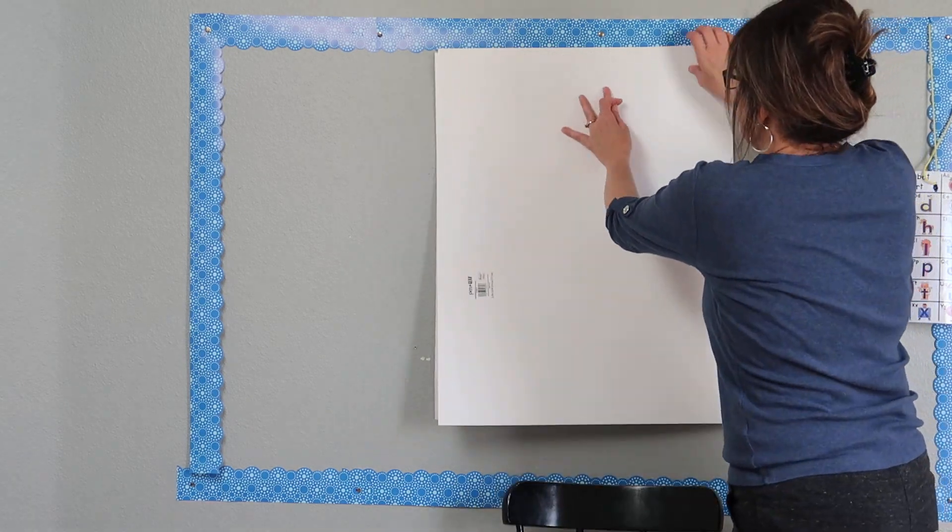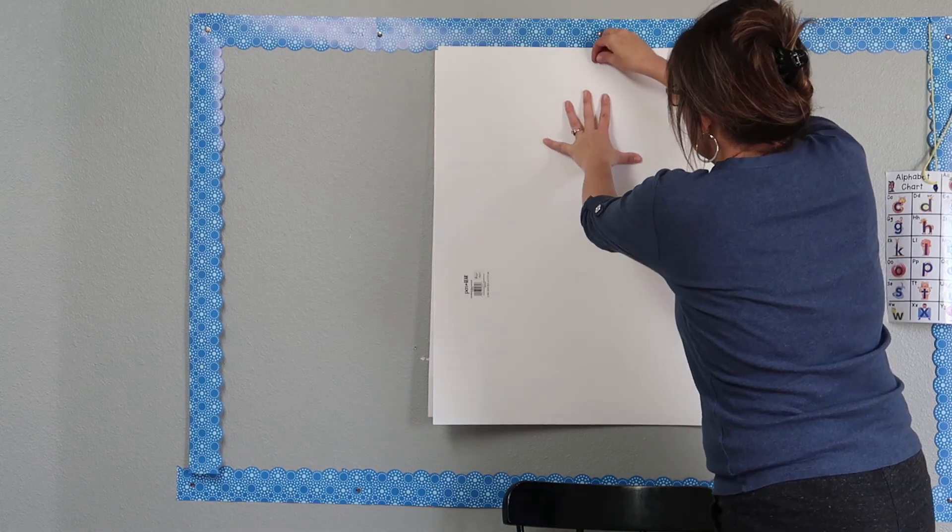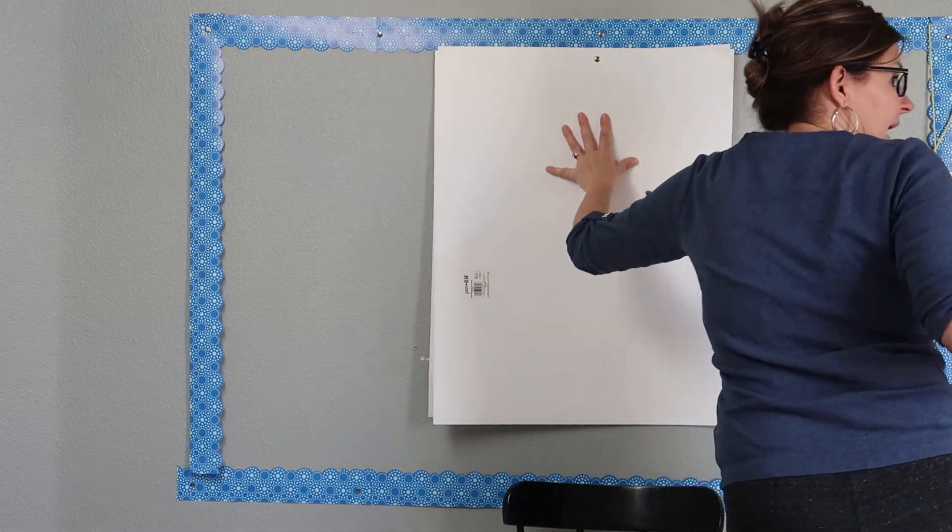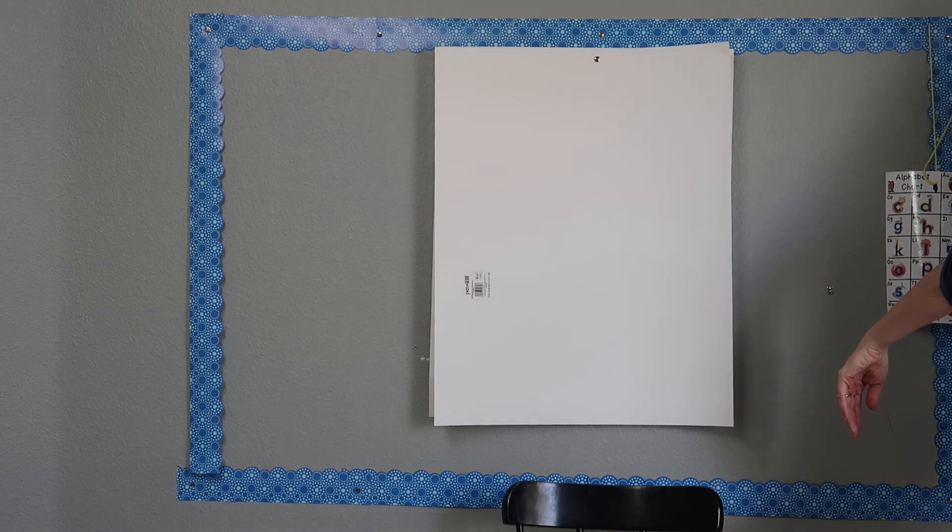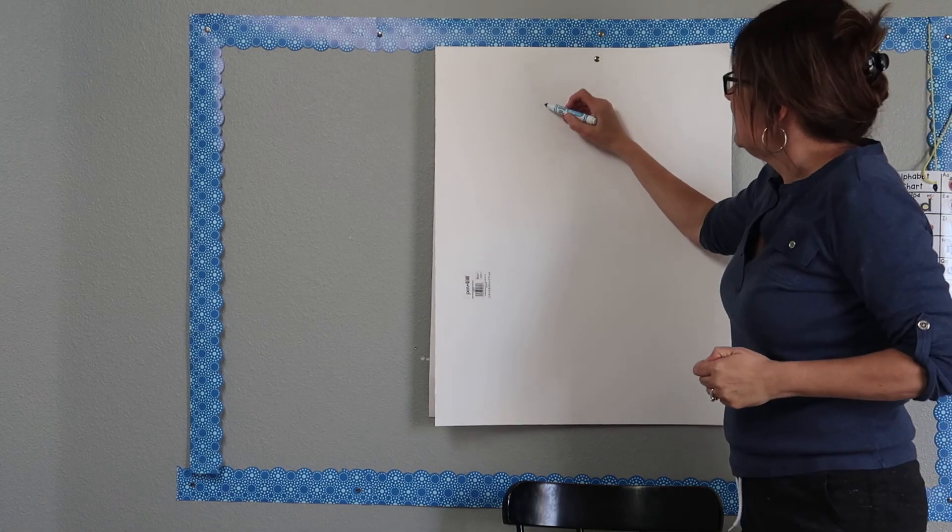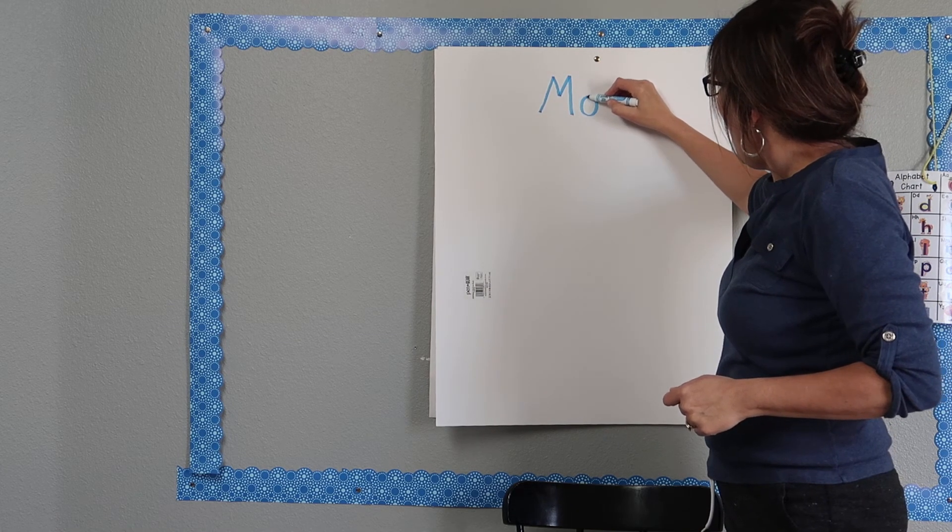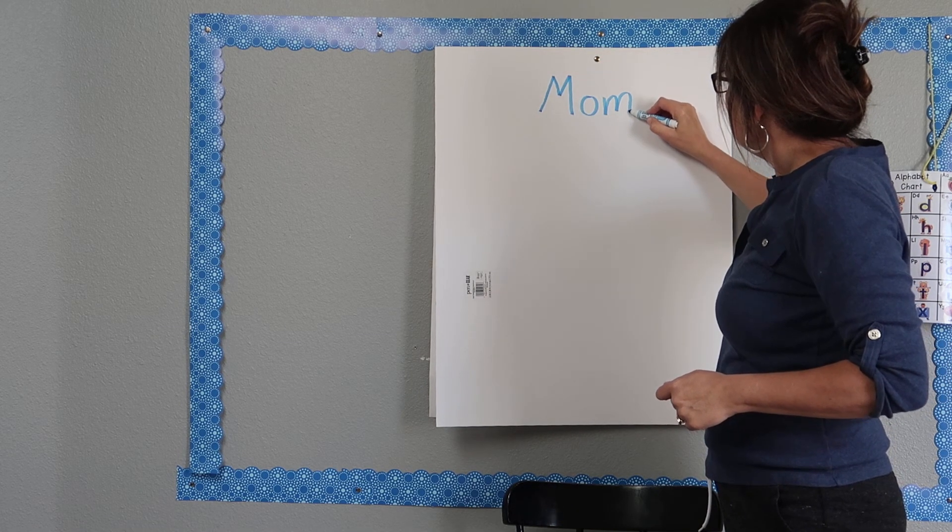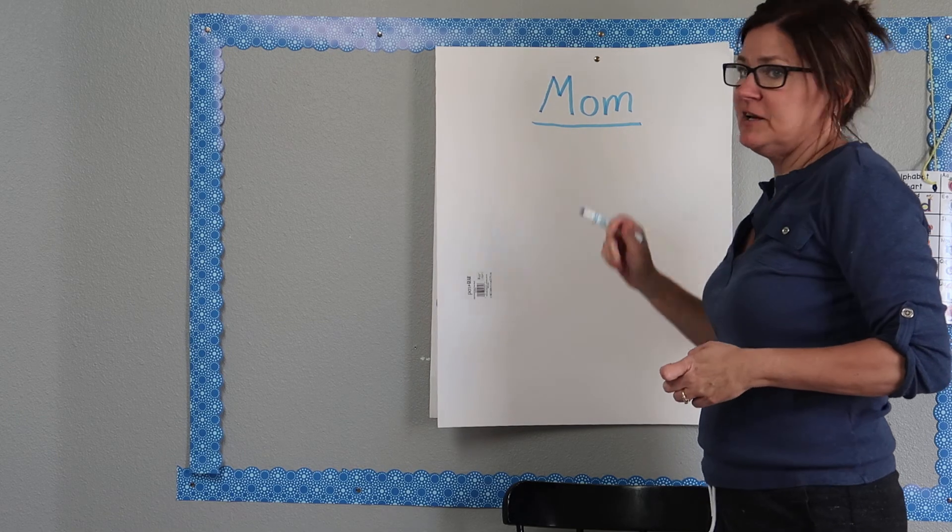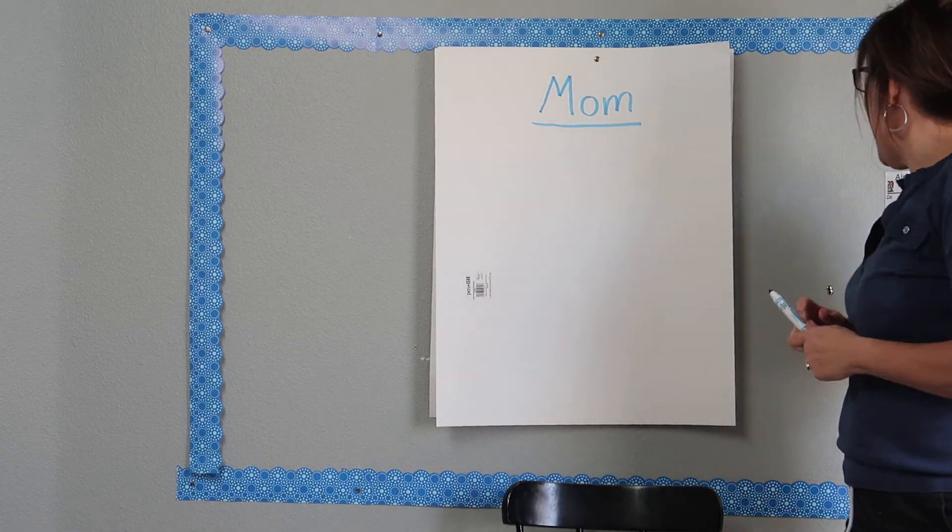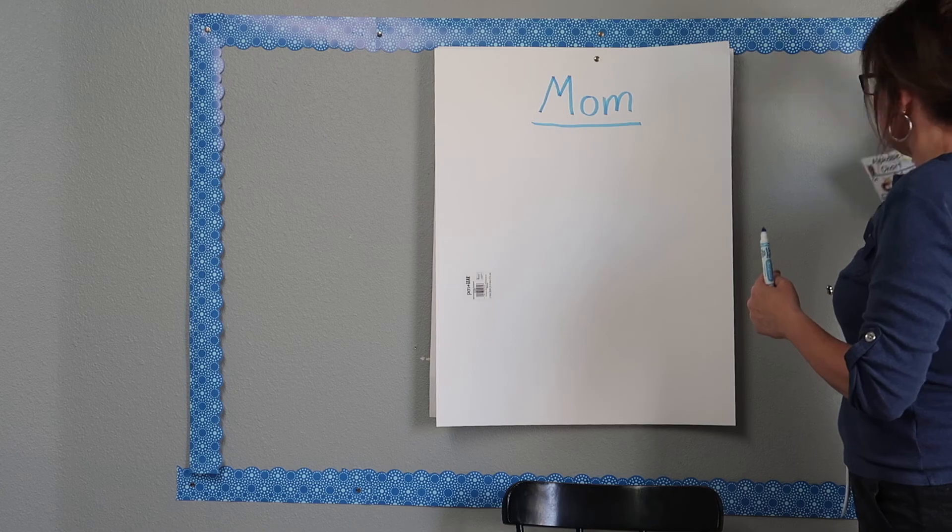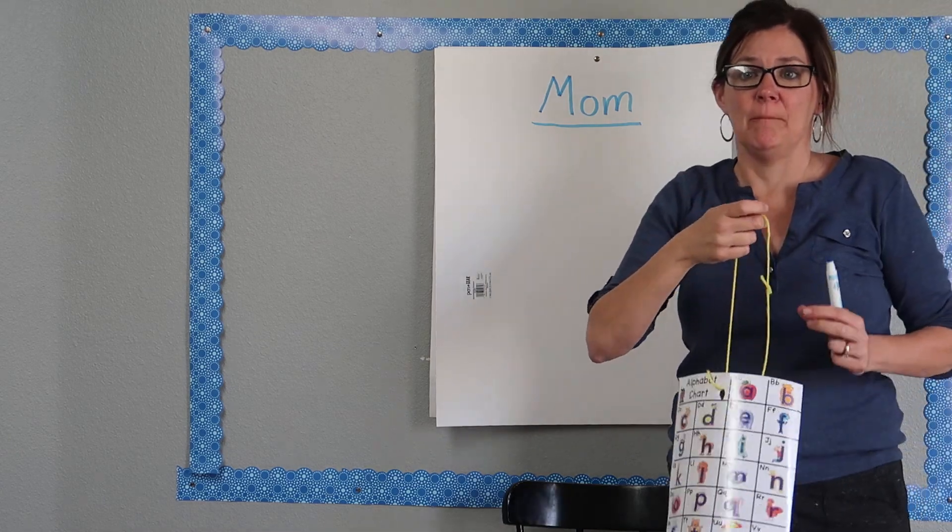I've got a new poster board right here. And I've got my markers over here. So we'll just title this one Mom. Mom. That's going to be the title of this poem. And then you're going to write about five or so things that a mom does.